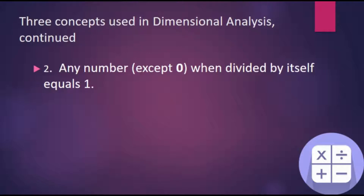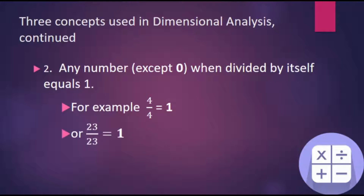Another concept that dimensional analysis relies on is the following: any number when divided by itself equals 1. For example, 4 divided by 4 is equal to 1, 23 divided by 23 is 1, or again if we have some measurement, 62 kilograms divided by 62 kilograms is equal to 1.